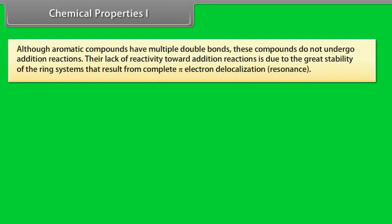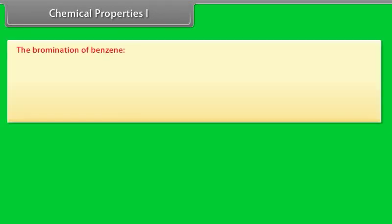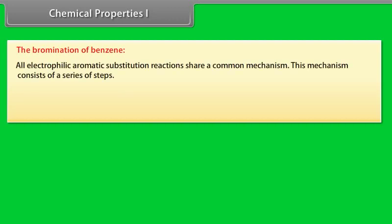Chemical properties 1. Although aromatic compounds have multiple double bonds, these compounds do not undergo addition reactions. Their lack of reactivity toward addition reactions is due to the great stability of the ring systems that result from complete pi electron delocalization, resonance. Aromatic compounds react by electrophilic aromatic substitution reactions in which the aromaticity of the ring system is preserved. For example, benzene reacts with bromine to form bromobenzene.